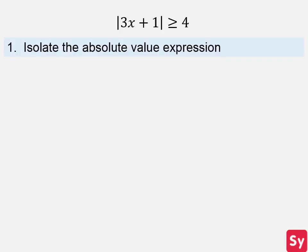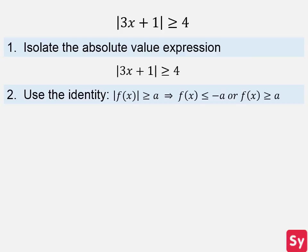First, we isolate the absolute value expression. This is already done, so we can move on to the next step. Next, we use this identity. So we have 3x plus 1 is greater than or equal to 4, or 3x plus 1 is less than or equal to negative 4.